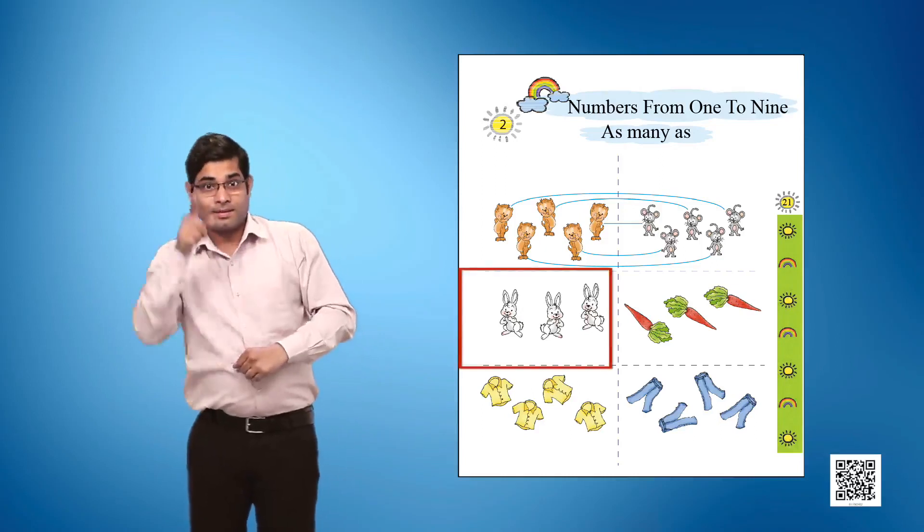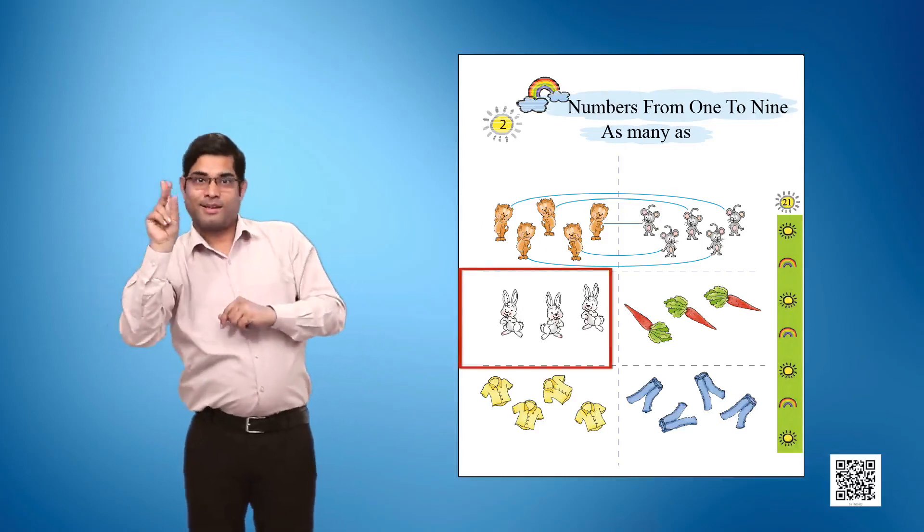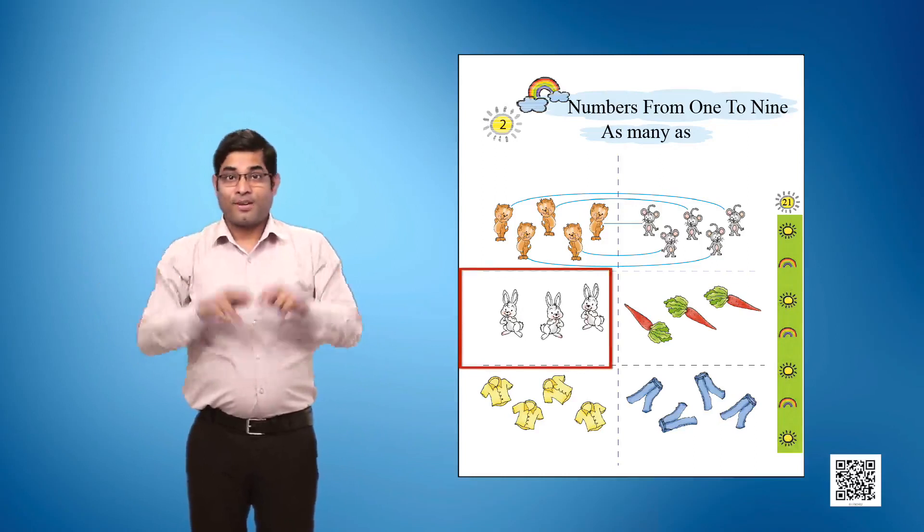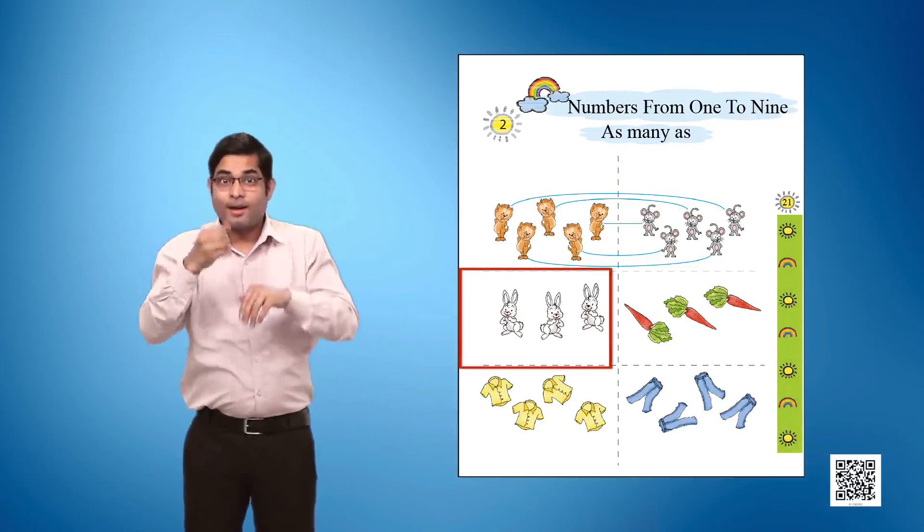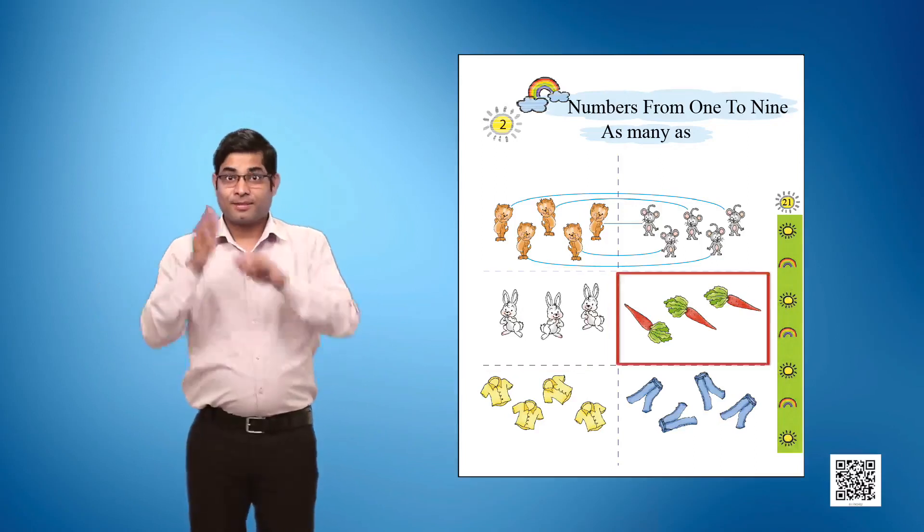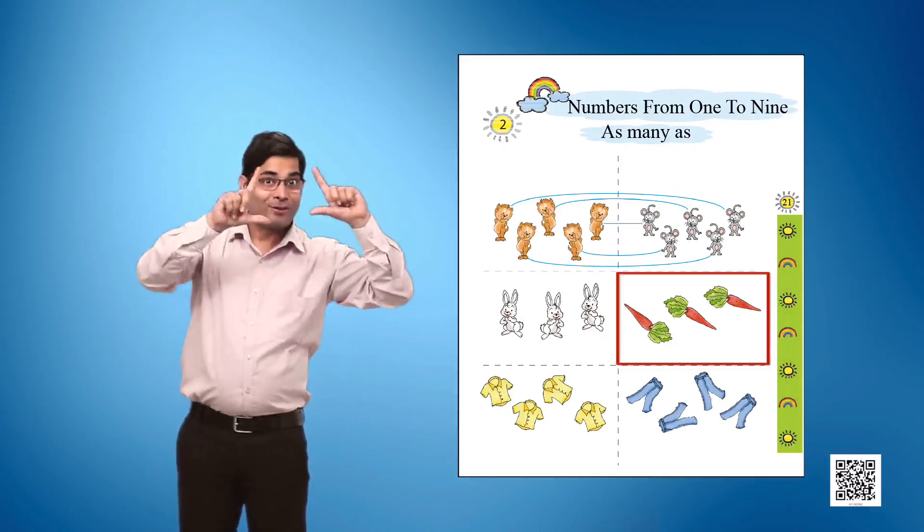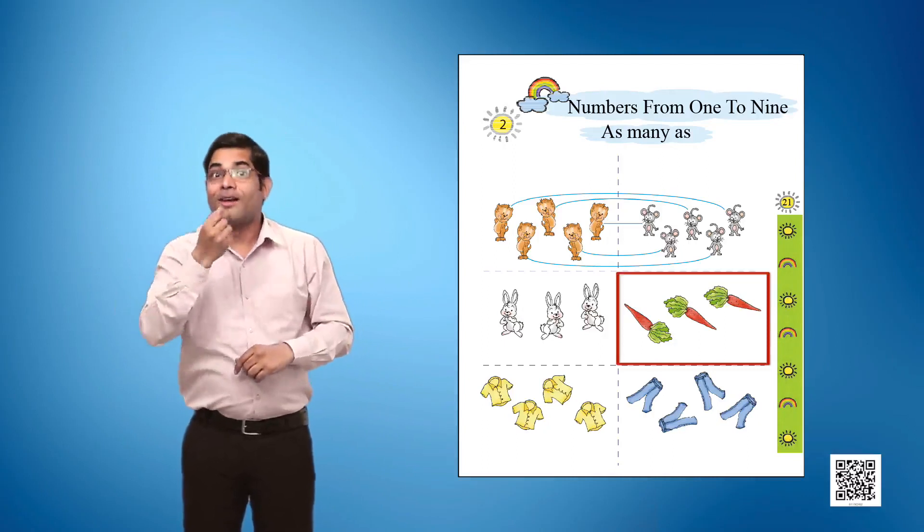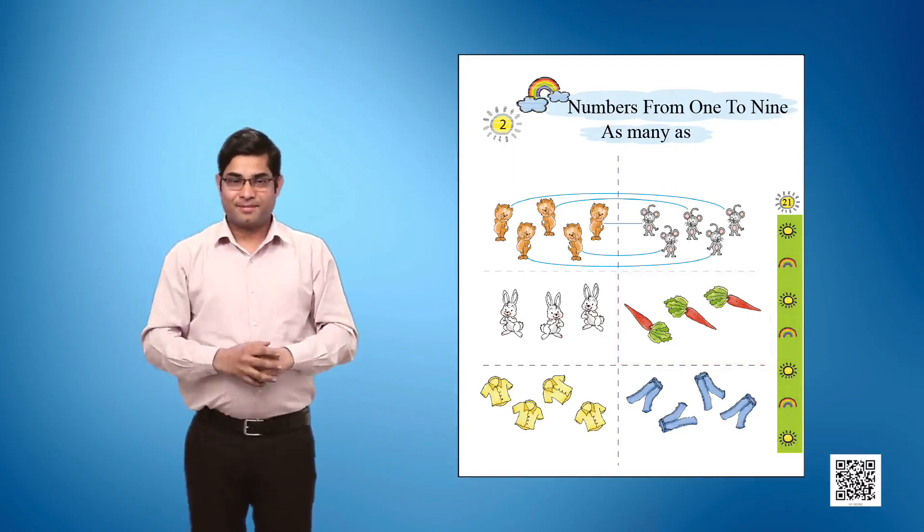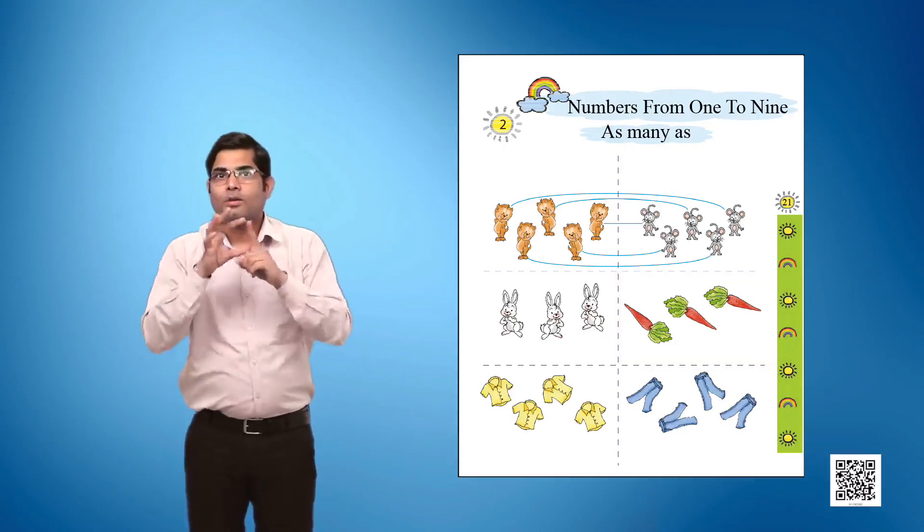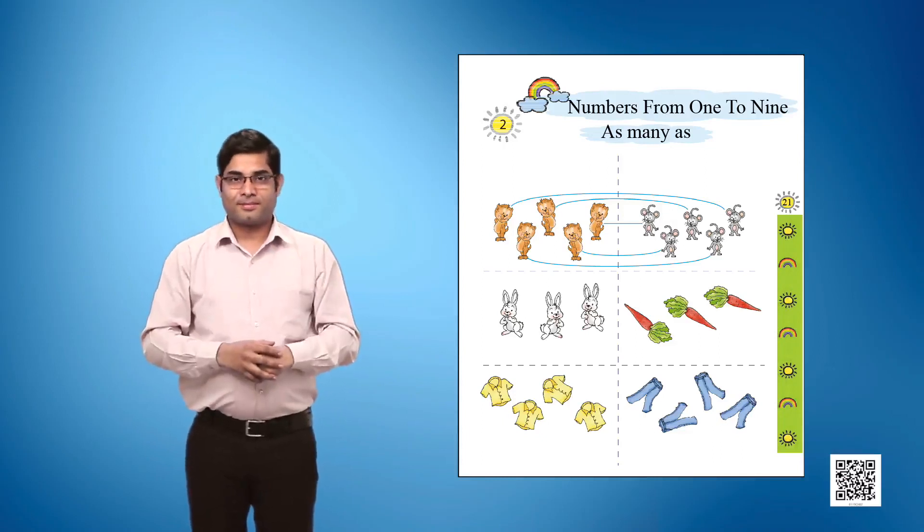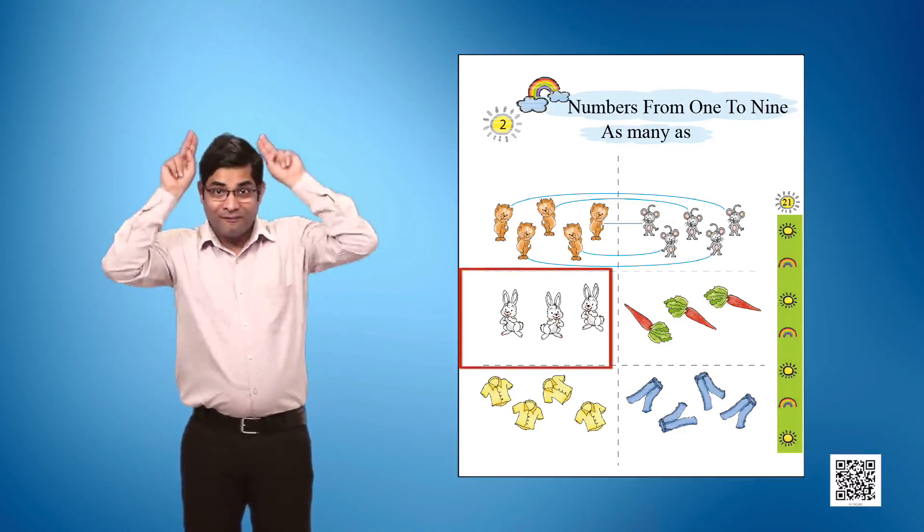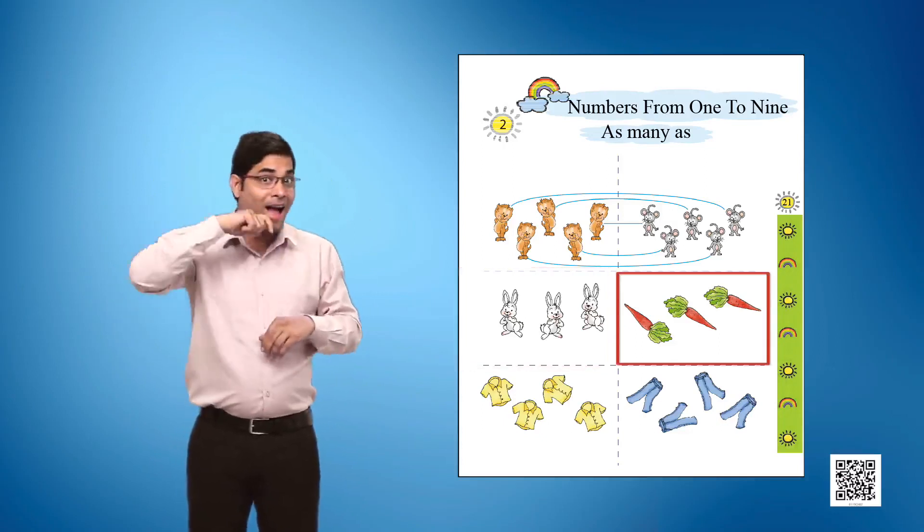Column 1, picture 2 shows 3 rabbits. Column 2, picture 2 shows carrots. Activity: Match the rabbits with the carrots.